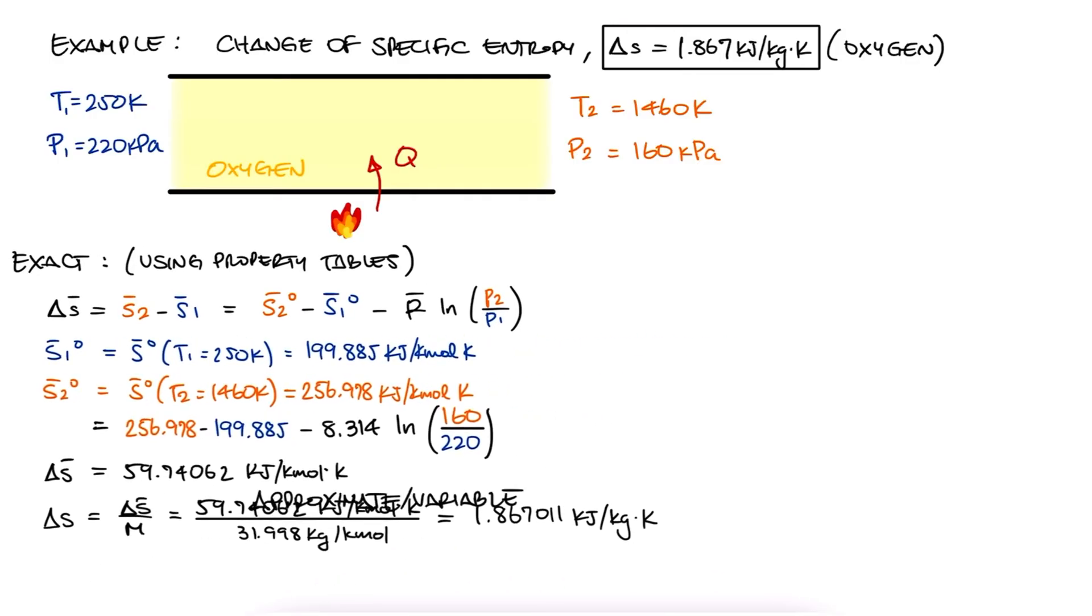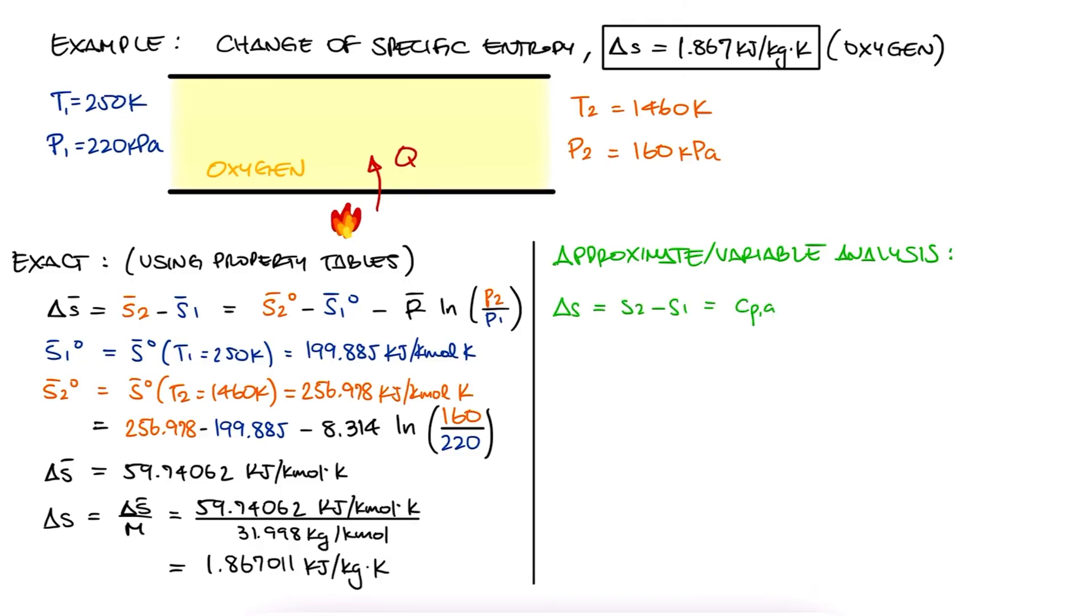Now let's try solving this with the variable, inexact, or approximate analysis. The change in specific entropy would be given by the expression with the average specific heat Cp. This means that we need to calculate an average specific heat for oxygen between 250 and 1460K. And remember that the average of Cp at 250 and 1460 is not the same as the Cp of the average temperature.